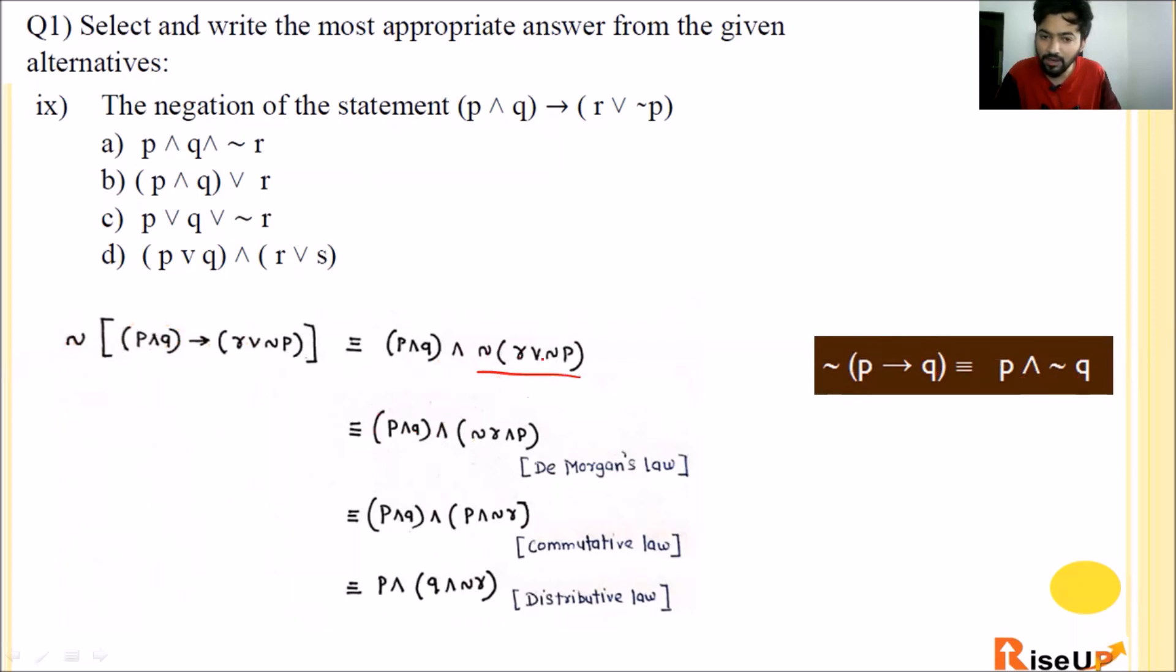Eighth one: If P implication Q is an implication, then the implication negation Q implication negation P is called its - this is nothing but contrapositive. So B is the correct option.